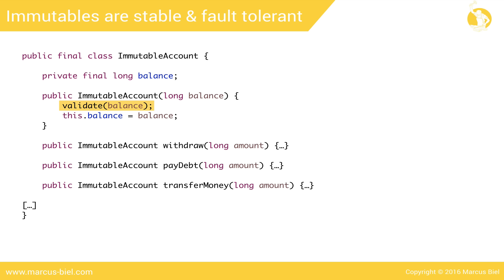This is really cool! Methods like withdraw, pay debt, and transfer money will return a new object, which will again call the constructor and validate the new balance. But it gets even better — an immutable remains consistent even in the case of an exception. Let me give you an example.